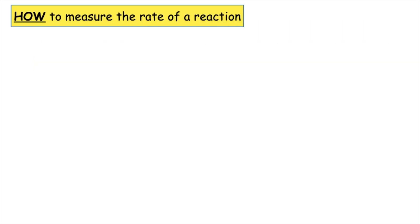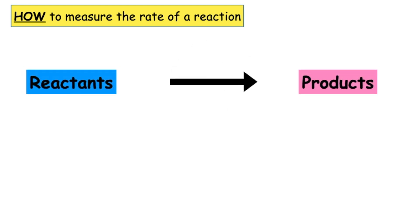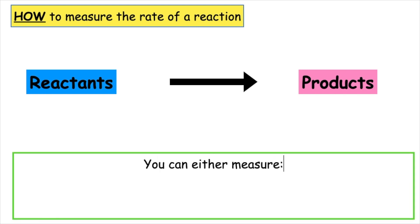In this video we're going to be looking at how to measure the rate of a reaction in an experiment. We know that reactants always change into products. There are two ways in which we can measure: we can either measure the mass of reactants or the volume of gas products being produced.